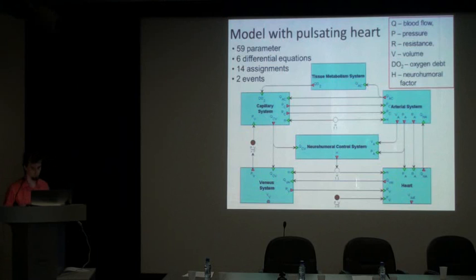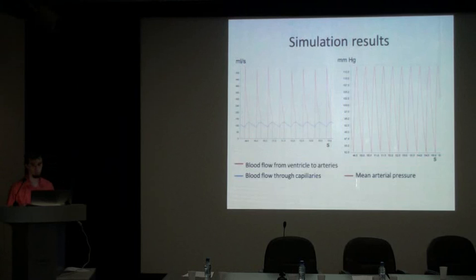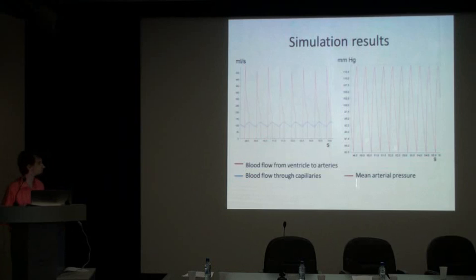Here are our simulation results, just to give an example of the model's work. As you can see, it contains rapidly oscillating parameters — the period of the heart cycle is nearly half a second. Here are blood flow from ventricle to arteries and blood flow through capillaries, and here is the mean pressure over a period.